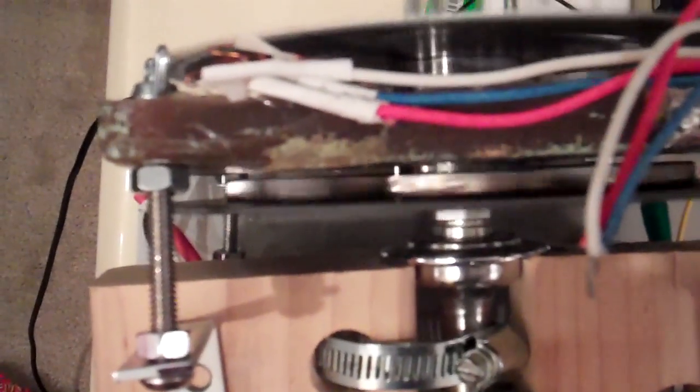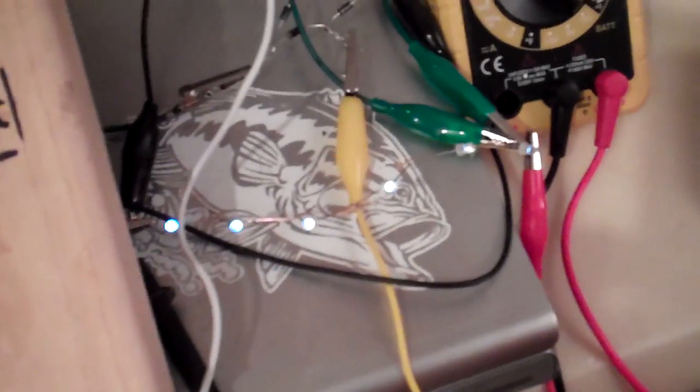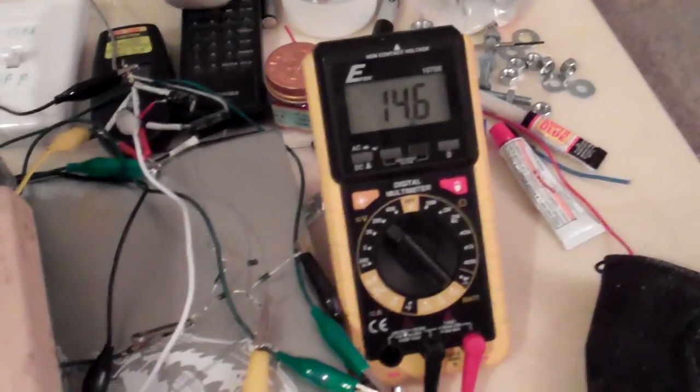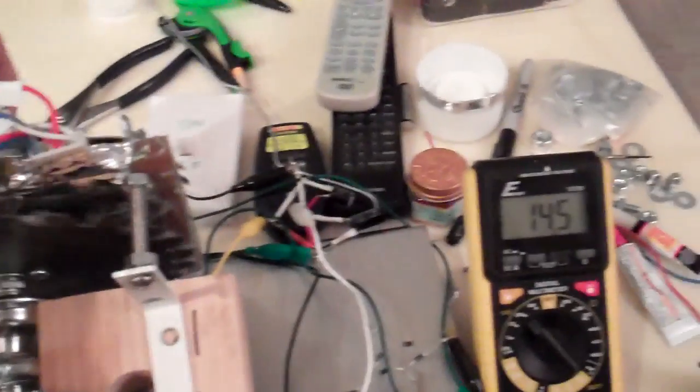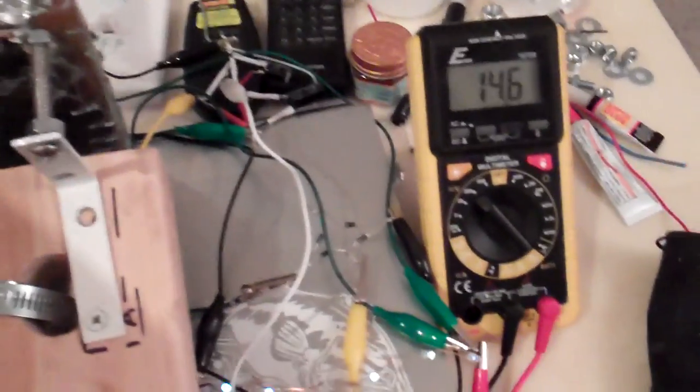So right now I think it's about turning about 60 RPM. And it's lighting a bunch of LEDs that I have. And even when I'm turning it very slowly, it's giving me like 14, 15 volts.